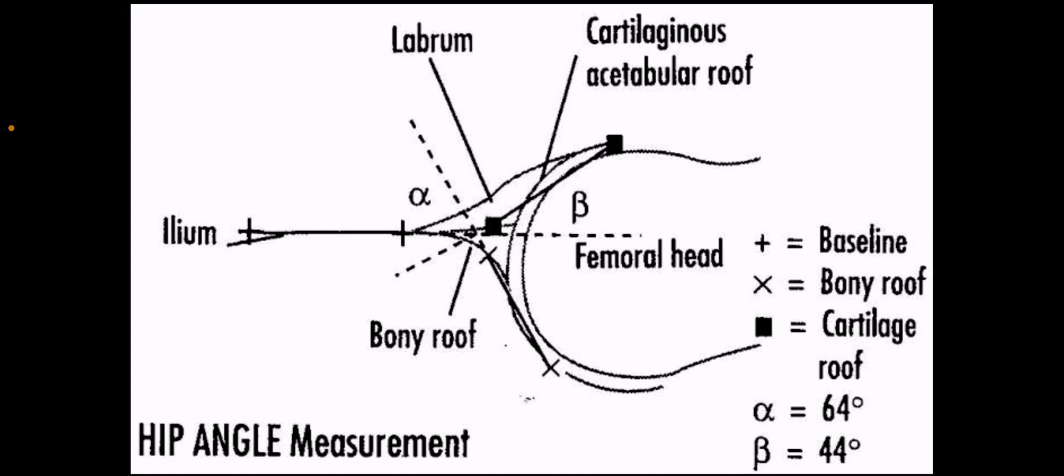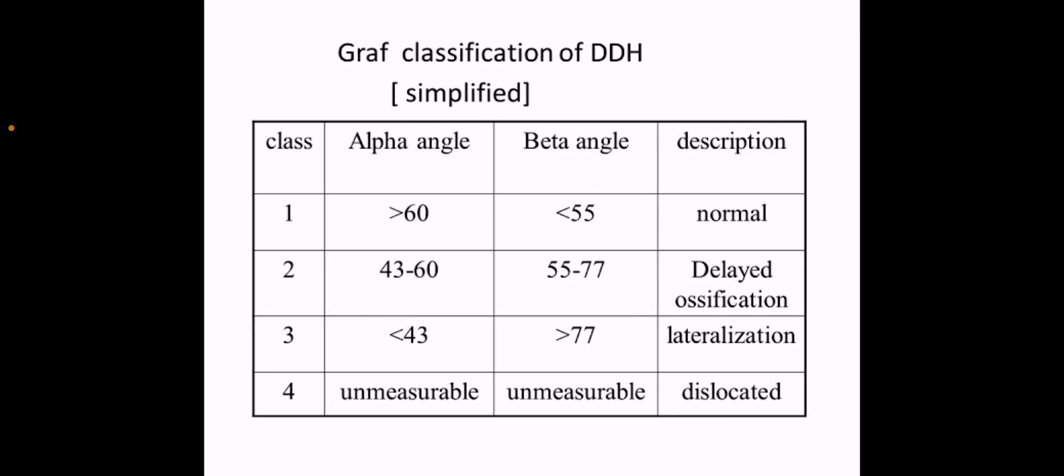Alpha angle: angle created by lines along the bony acetabulum and the ilium. Normal is greater than 60 degrees. Beta angle: angle created by lines along the labrum and the ilium. Normal is greater than 55 degrees. Beta angle less than alpha angle is mostly DDH.